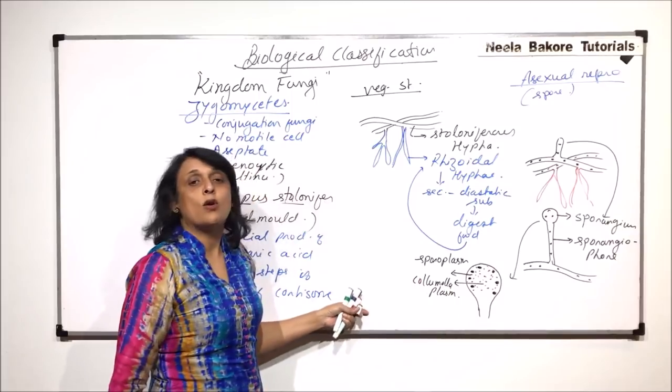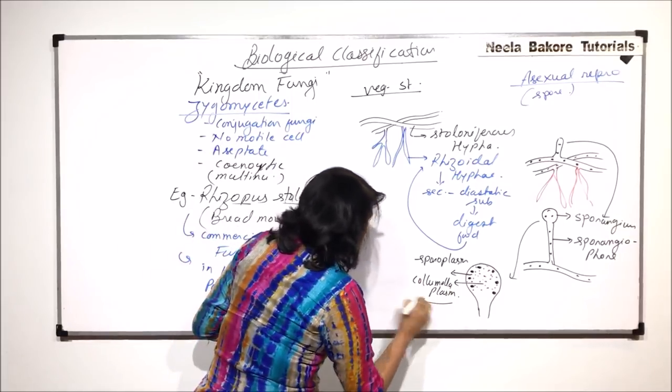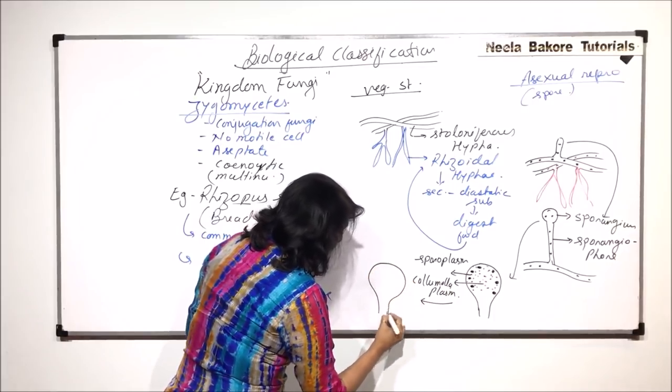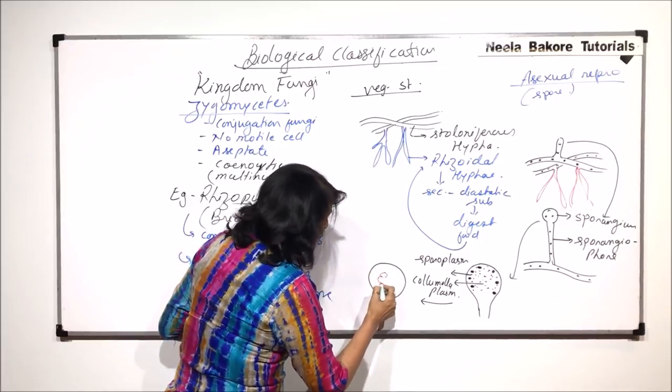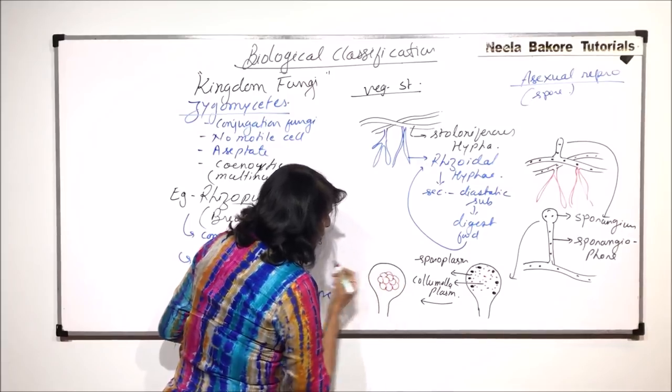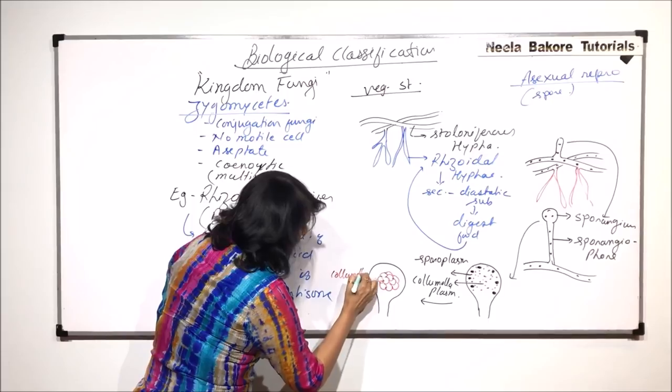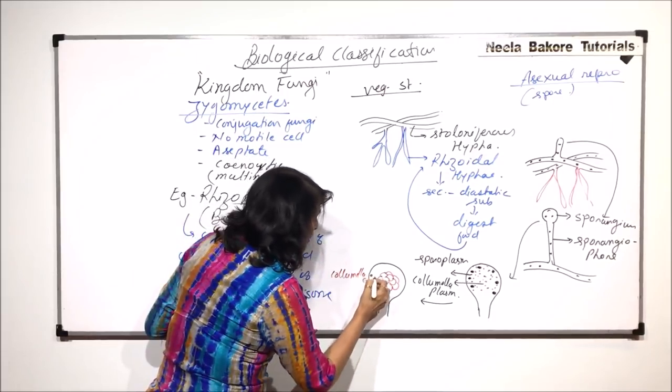What happens in this columella is vacuoles are going to appear. In the next stage, what is going to be visible to us is there are vacuoles which are formed in the central cytoplasmic area and this is that area which is known as the columella. Now the nuclei are going to divide.